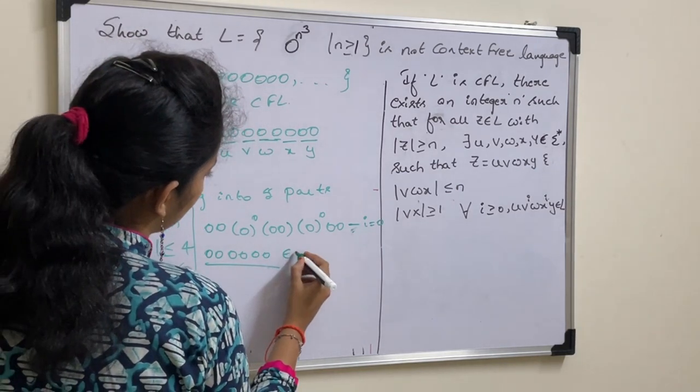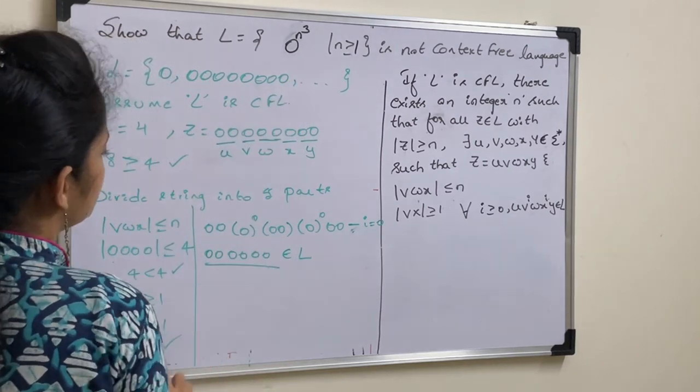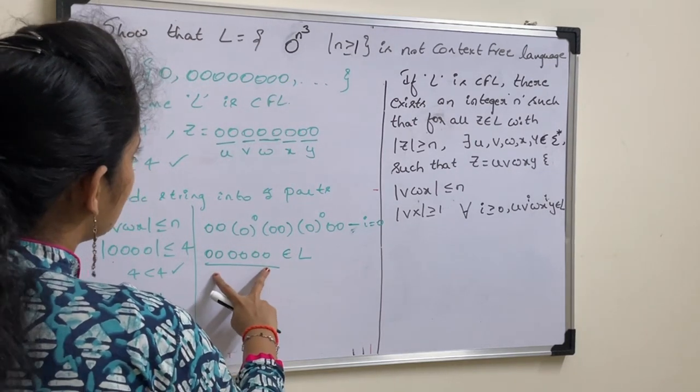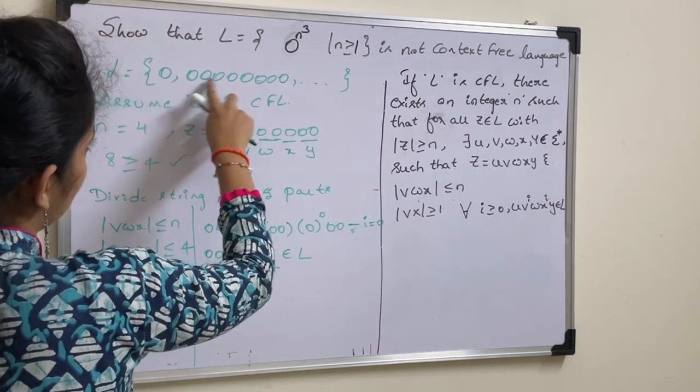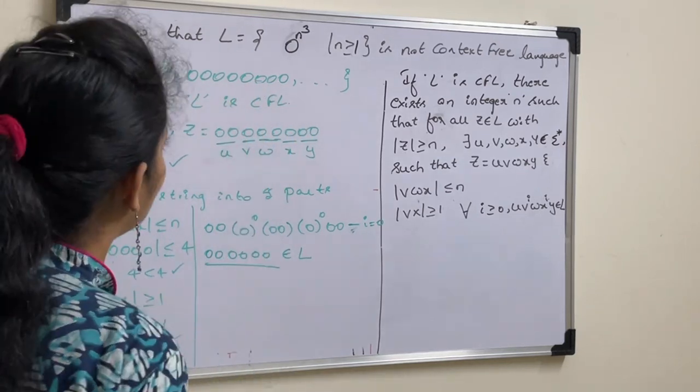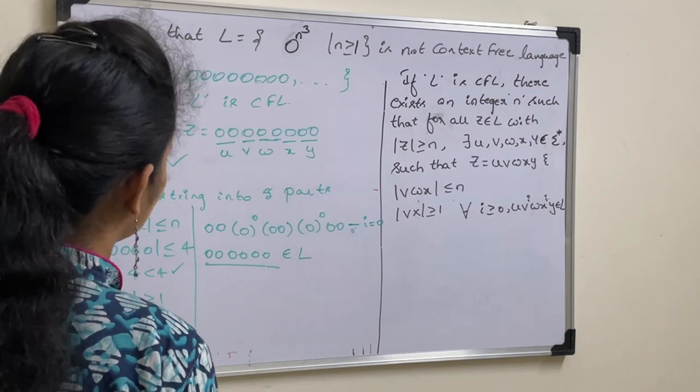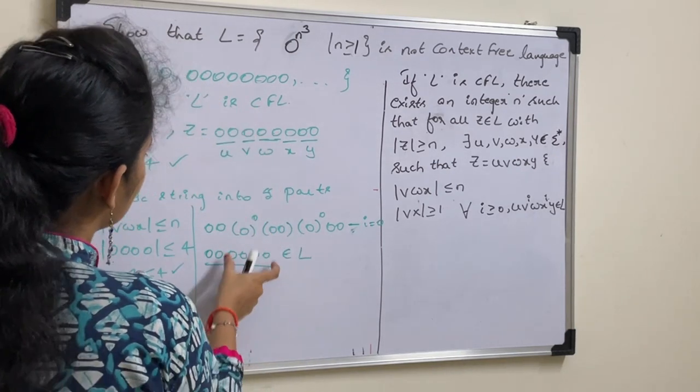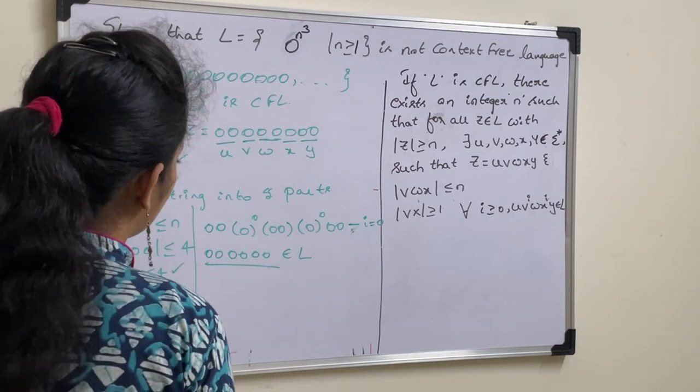Now, check whether this belongs to the derived language or not. We have 6 zeros here but in this case, this language should contain at least 8 zeros. Single zero or 8 zeros. There is no 6 zeros string in this language.